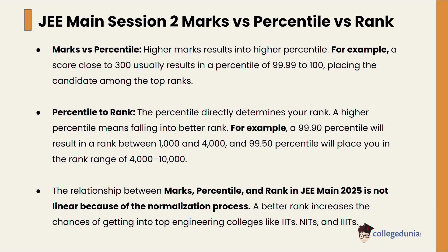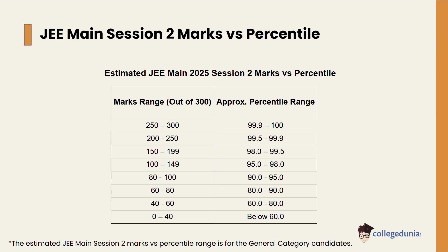Here is the estimated JEE Main Session 2 marks versus percentile. The data is estimated for general category candidates only. Marks are out of 300. If a candidate scores between 250 to 300, they will get a percentile in the 99.9 to 100 range. As marks decrease, the percentile will also decrease accordingly.